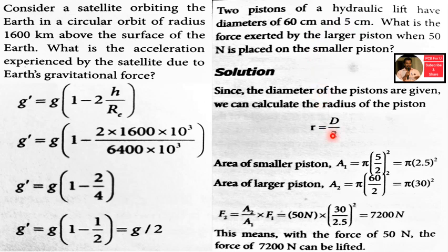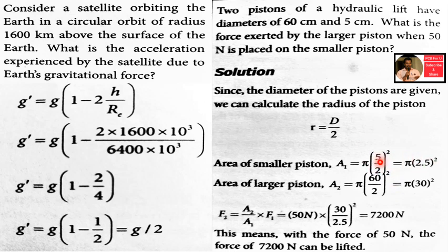Since the diameter of the piston is given, the radius R equals d by 2. The area A1 equals pi R squared. For the small piston with diameter 5 cm, radius is 5 by 2, which is 2.5 cm. So A1 equals pi into 2.5 squared.